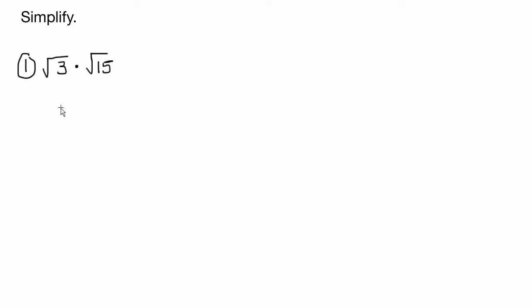Let's simplify some more radicals, but this time we're going to have to do a little bit of multiplying before the simplifying. Let me just remind you of a property: the square root of a times the square root of b equals the square root of a times b. We're going to use that property here.